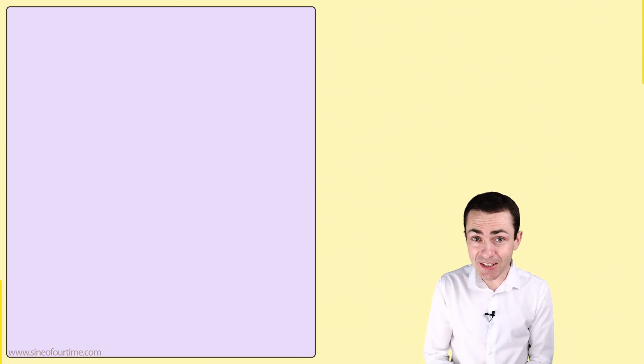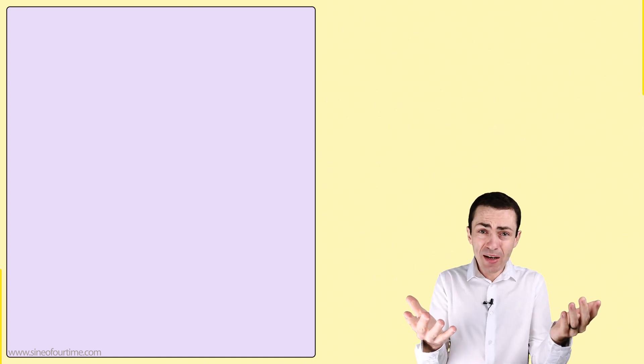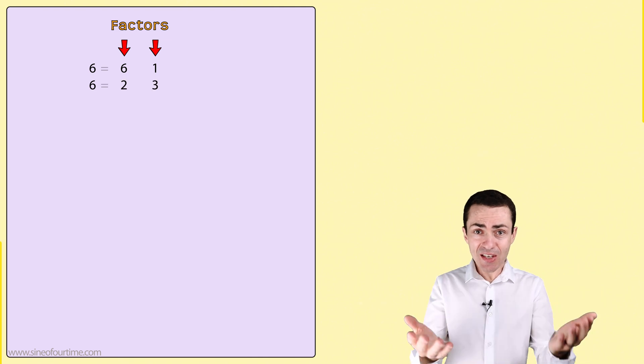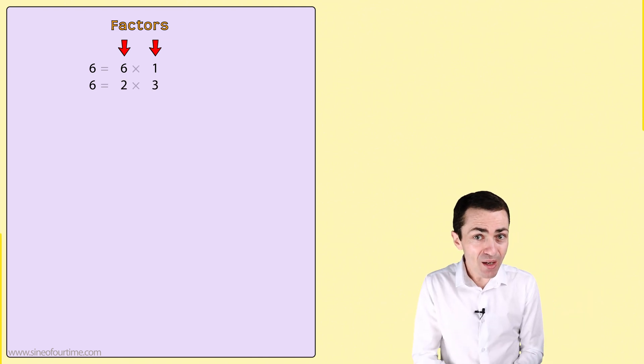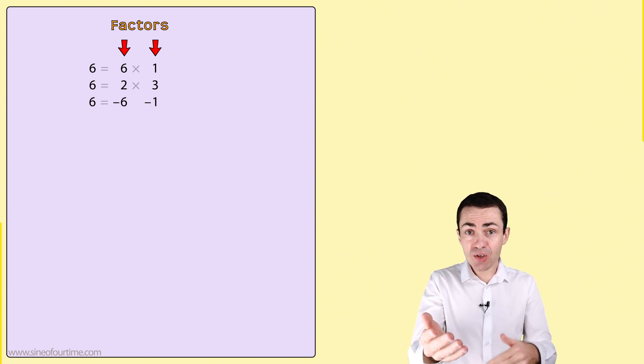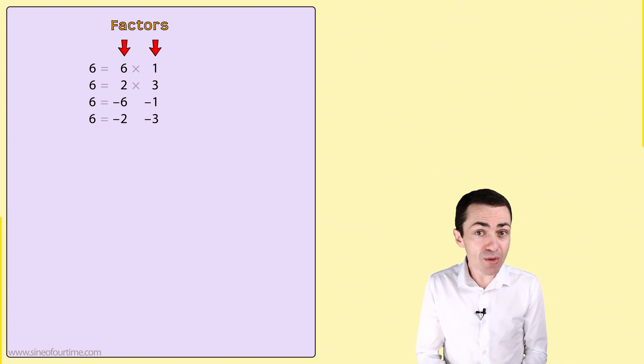Before we learn about what is stated in the factor theorem, let's first take a moment to think about what factors really are. If I asked you to list all of the factors of 6, you may say 6 and 1, or 2 and 3, since these numbers multiply together to give us 6. You may also say negative 6 and negative 1, or negative 2 and negative 3, since these numbers also multiply to give us 6.